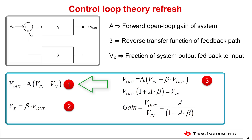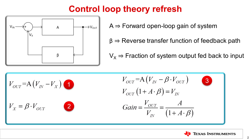Equation 1 can be derived by observing the system's forward transfer function, and is simply the definition of A. Equation 2 is derived by observing the system's reverse transfer function, and is simply the definition of beta. Substituting the value of Vx from equation 2 back into equation 1, we get equation 3, which after further simplification gives the system's closed loop gain. We will next see how this model can be applied to a fully differential amplifier.